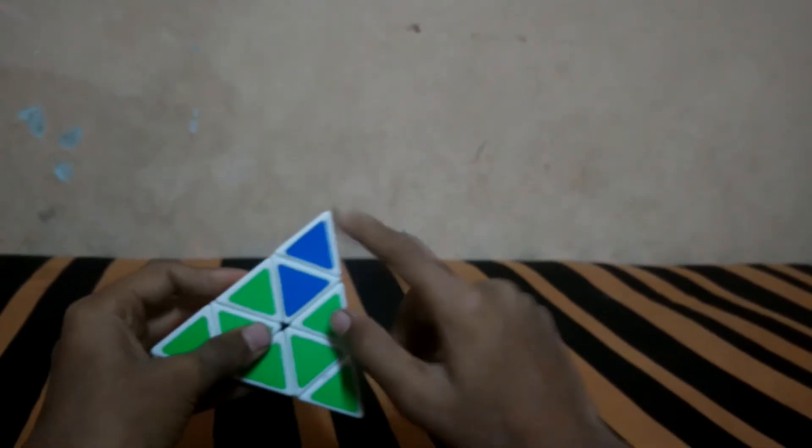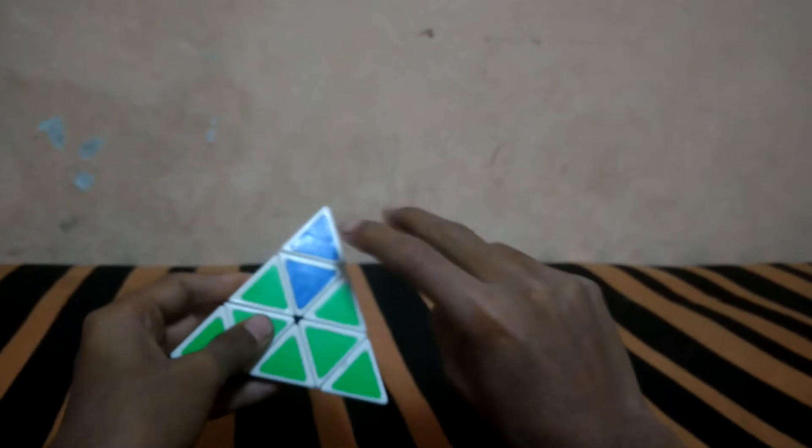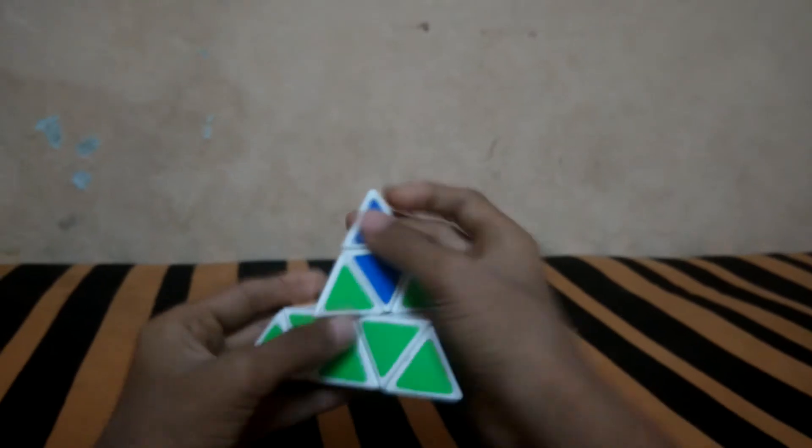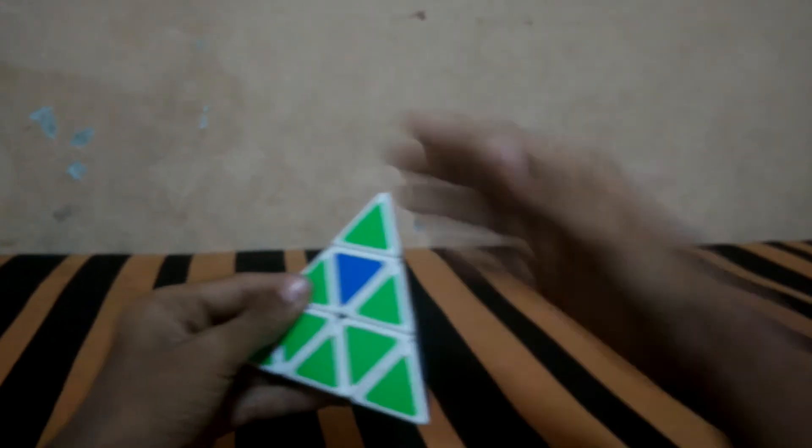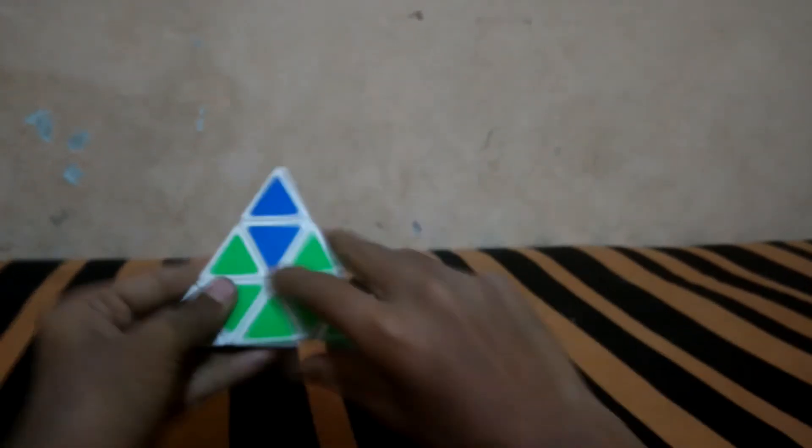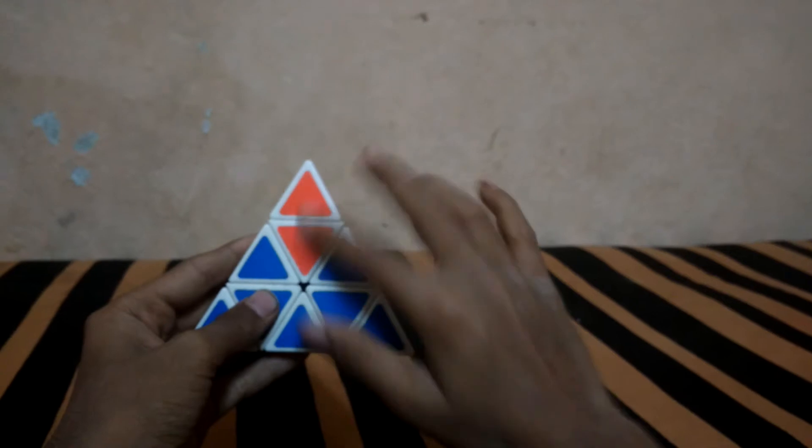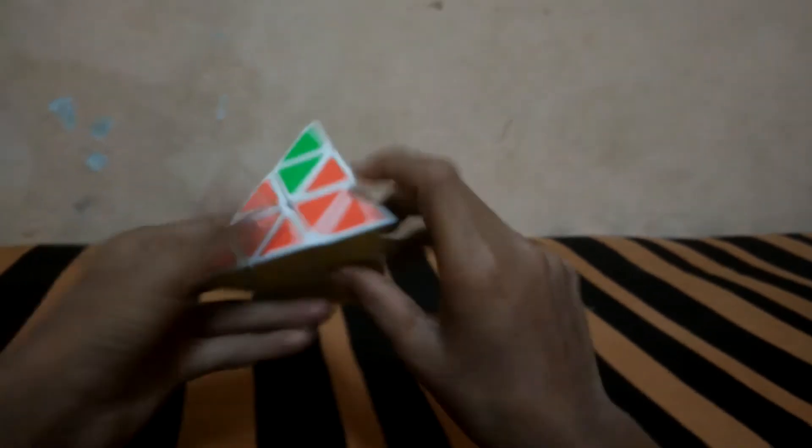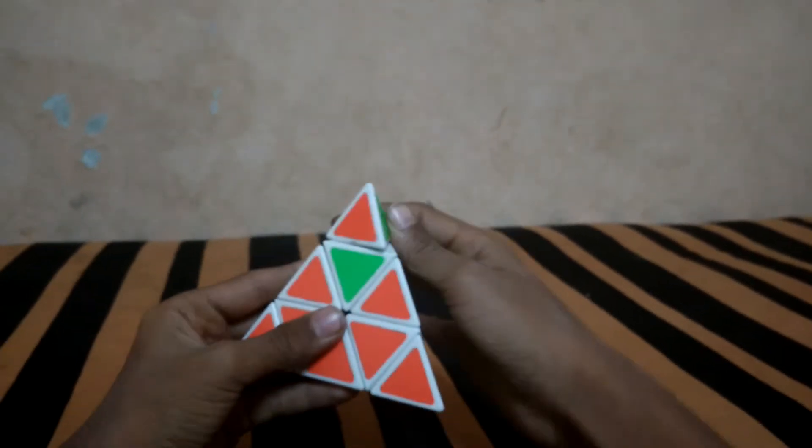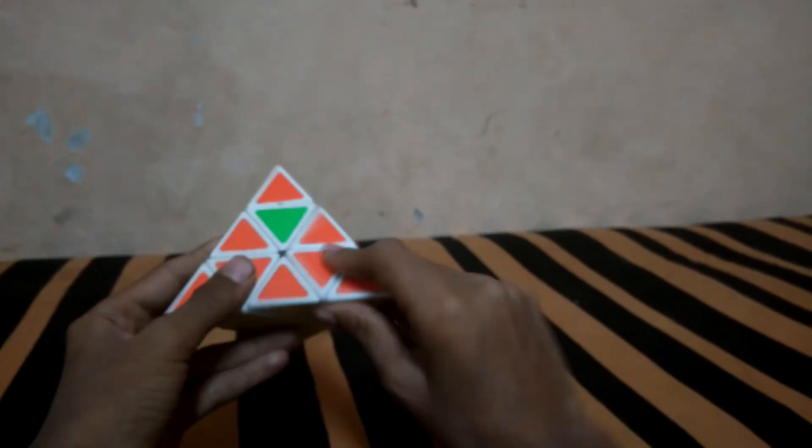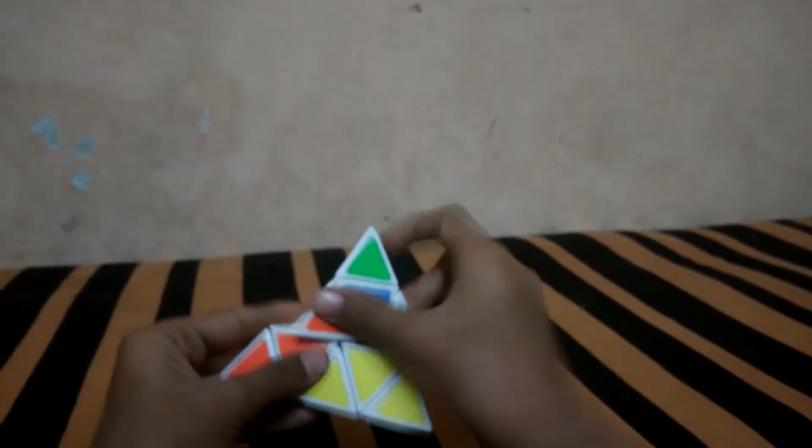After this, there are two cases, or three cases. The edges come to all sides like this. The formula is R U R' U R U R U R' U.